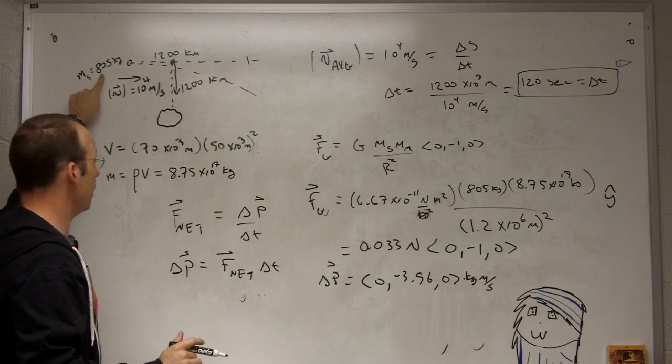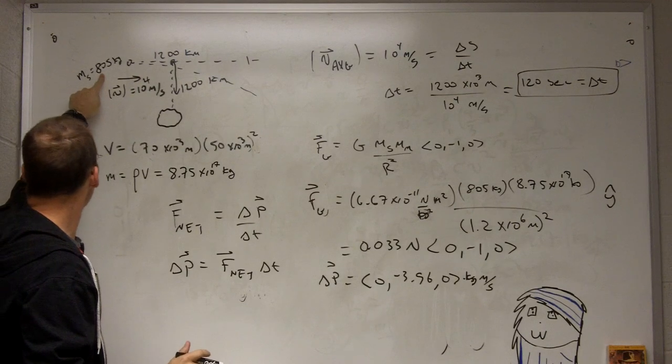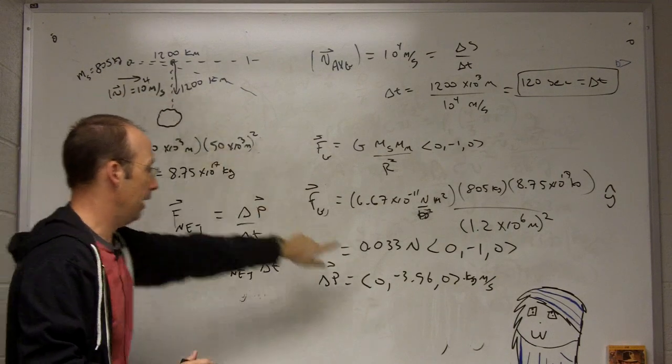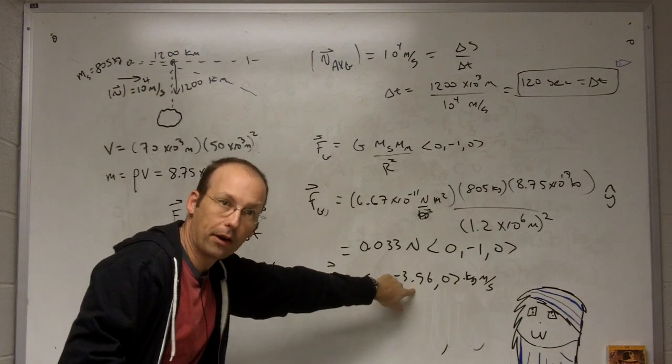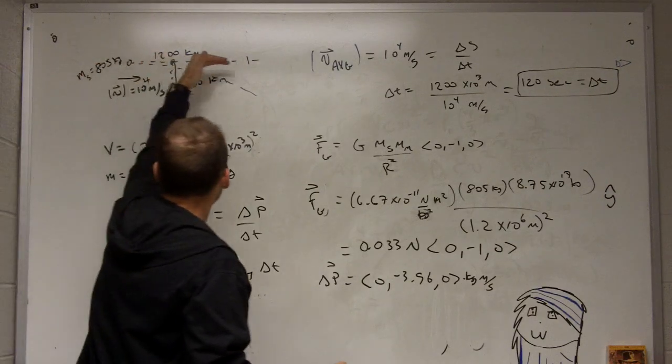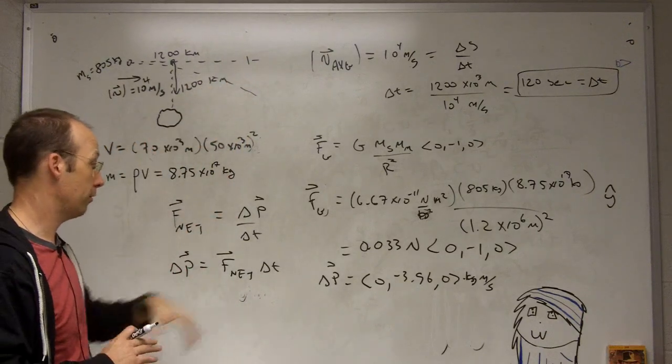And just look at the initial momentum. The initial magnitude of momentum is 8 times 10^6 kilogram meters per second. And the change is a small amount here. So this assumption is okay, right, because it doesn't go down that much compared to the way it was going before. So I'm probably okay.